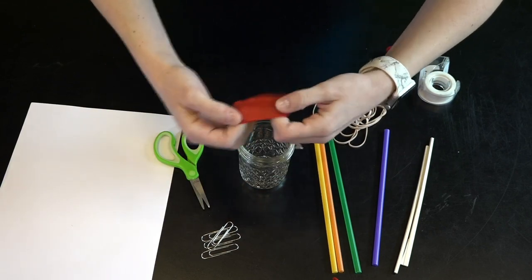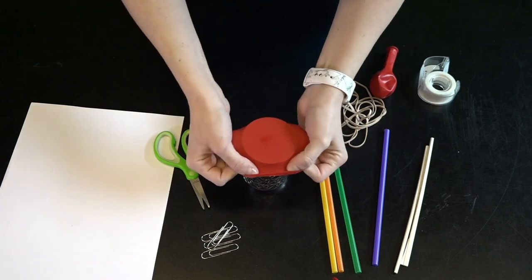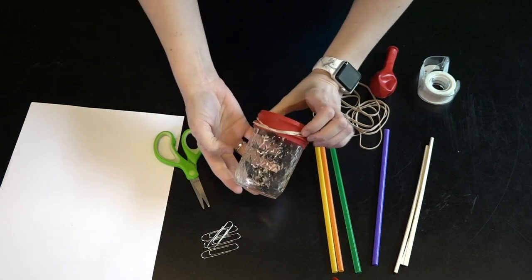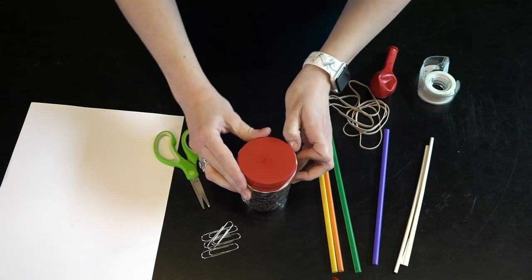Stretch the balloon so that it fits over the mouth of the jar nice and tight. The tighter the better. Use a rubber band to keep the balloon firmly in place over the mouth of the jar.